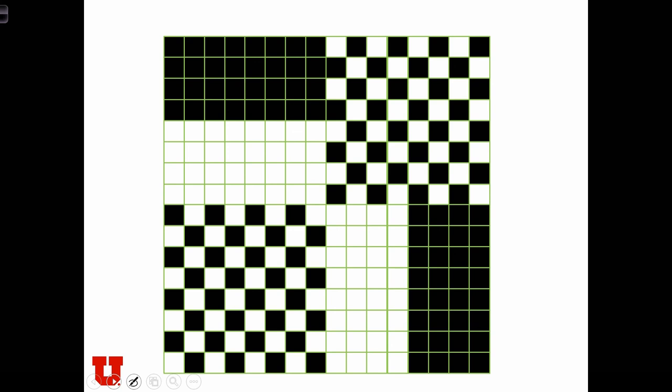Local Moran's I can also be used in cases where global Moran's I gives an incorrect global measure of autocorrelation on a map. Here we have a map that's split up into four different spatial regimes.